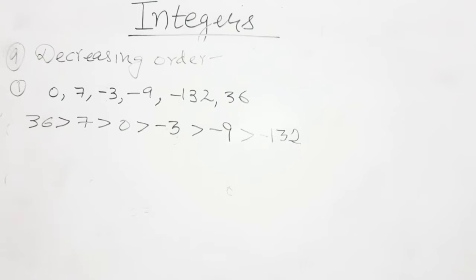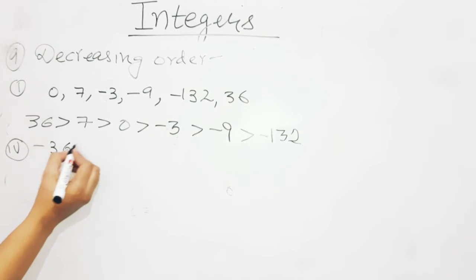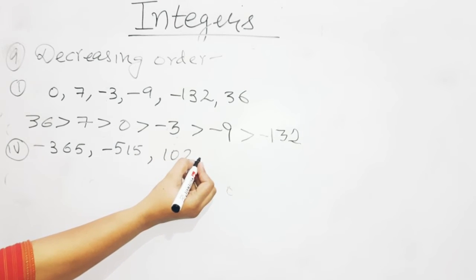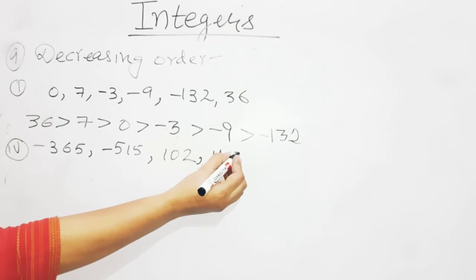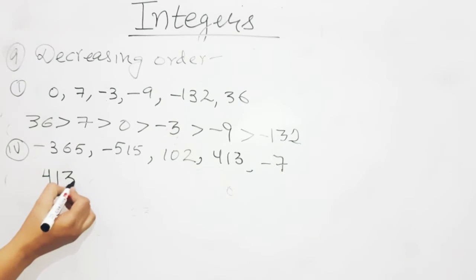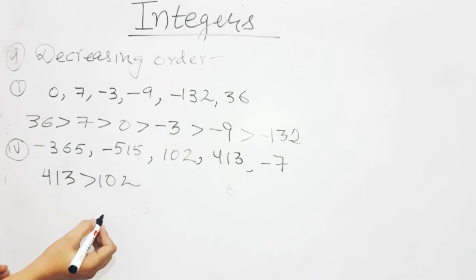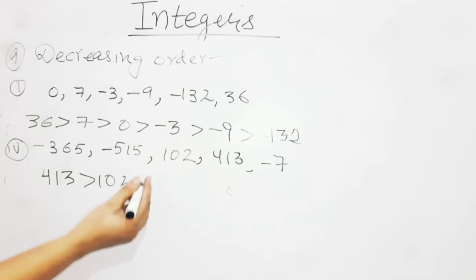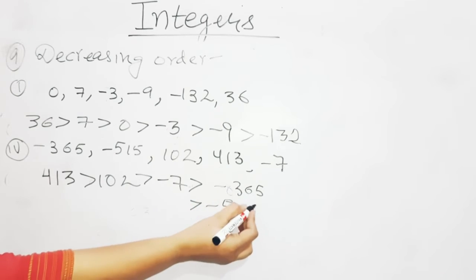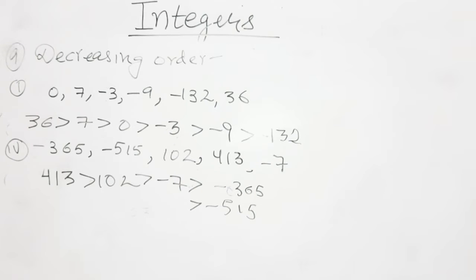I have done the first option. Now I will do the fourth option. Second option and third option you have to do in the homework copy. For the fourth option, arranging in descending order — the biggest comes first. The positive numbers are 102 and 413. 413 is bigger than 102. Then in the negatives, the smallest absolute value is greatest: minus 7, then minus 365, then minus 550.